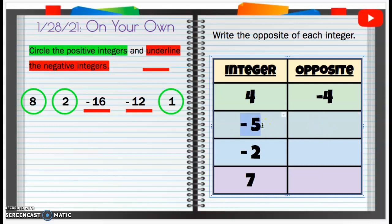Opposite of a negative 5 is going to be a positive 5. Opposite of negative 2 is going to be a positive 2. And opposite of 7 is going to be a negative 7.